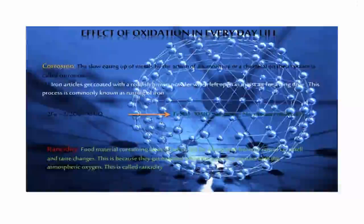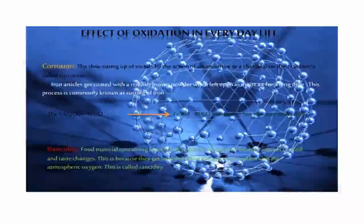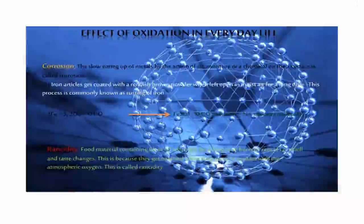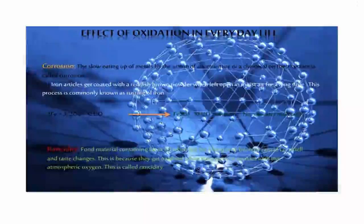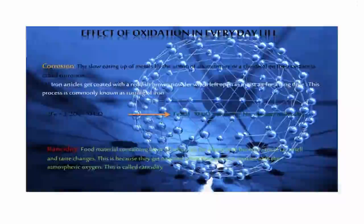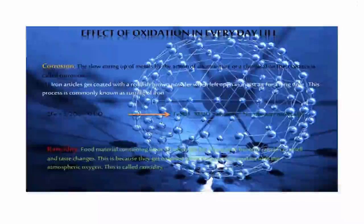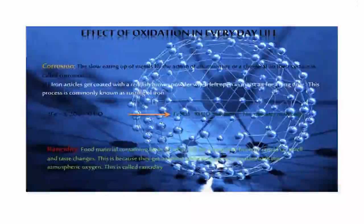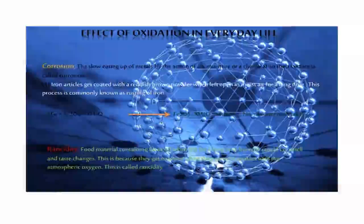Effect of oxidation in everyday life: Corrosion. The slow eating up of metals by the action of air, moisture, or a chemical on their surface is called corrosion. Iron articles get coated with a reddish-brown powder when left in moist air for a long period of time. This process is commonly known as rusting of iron.